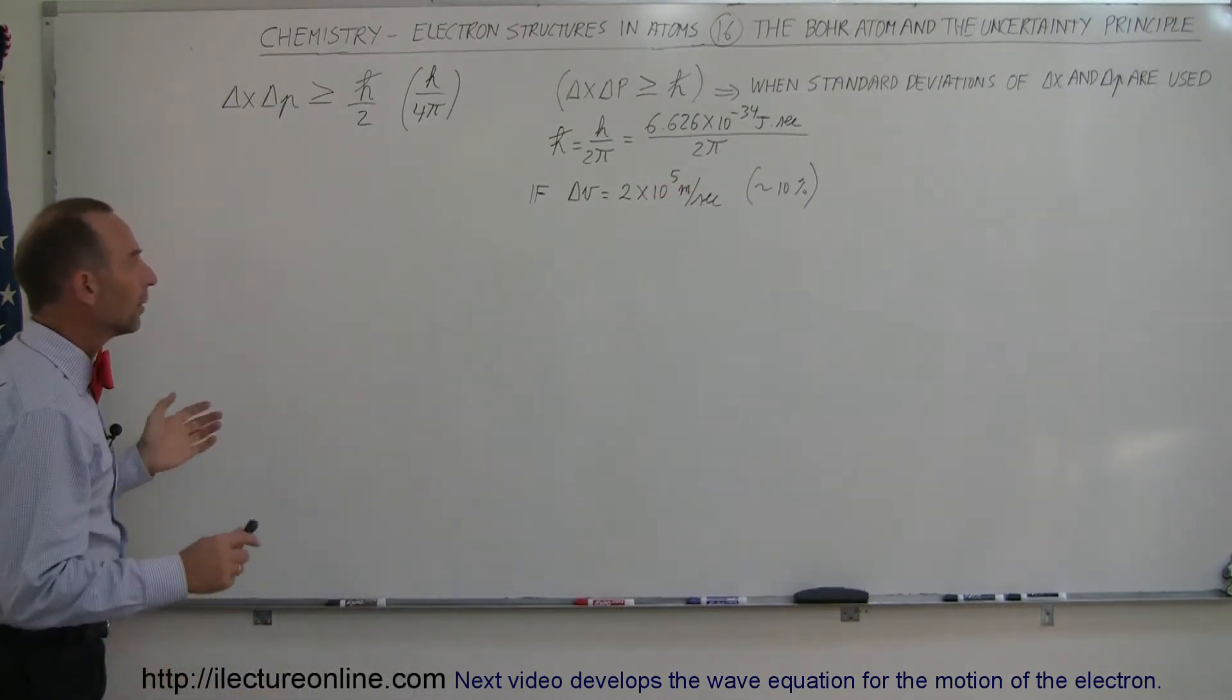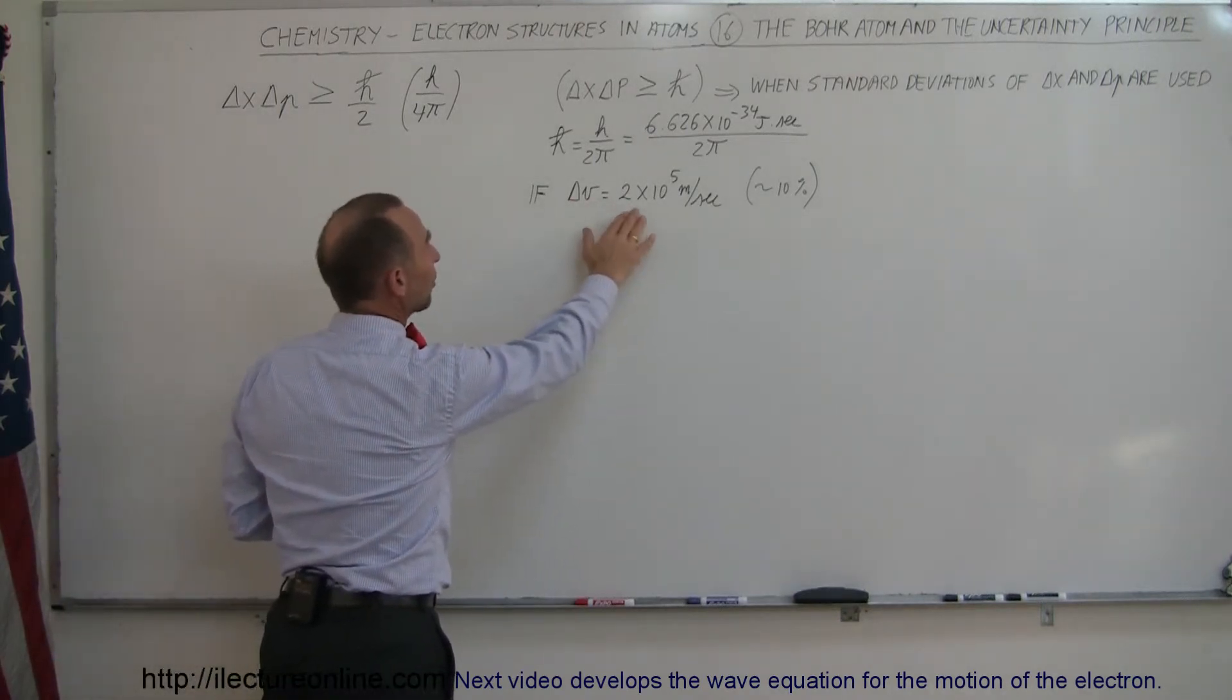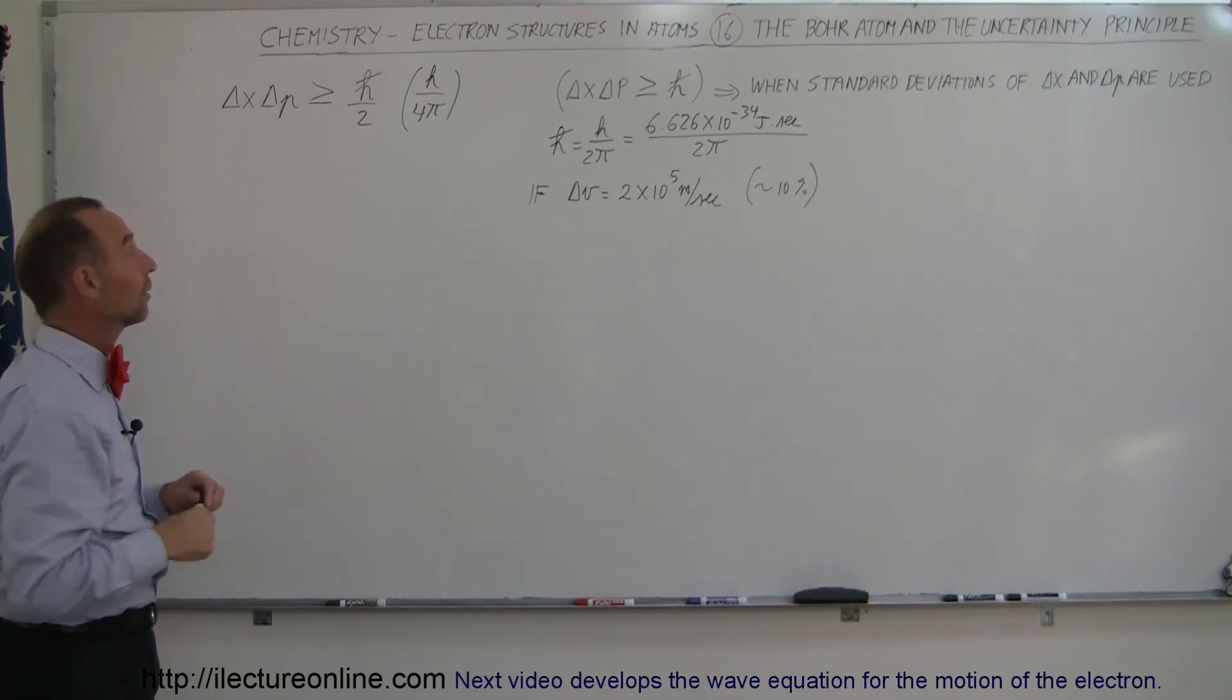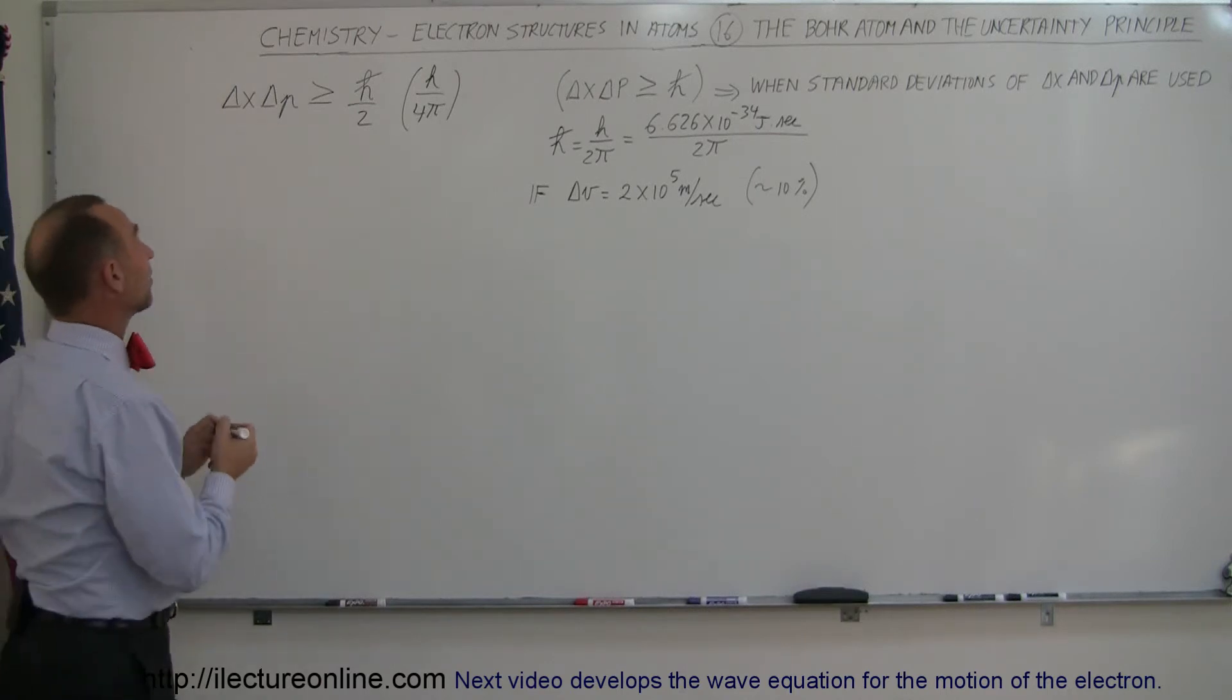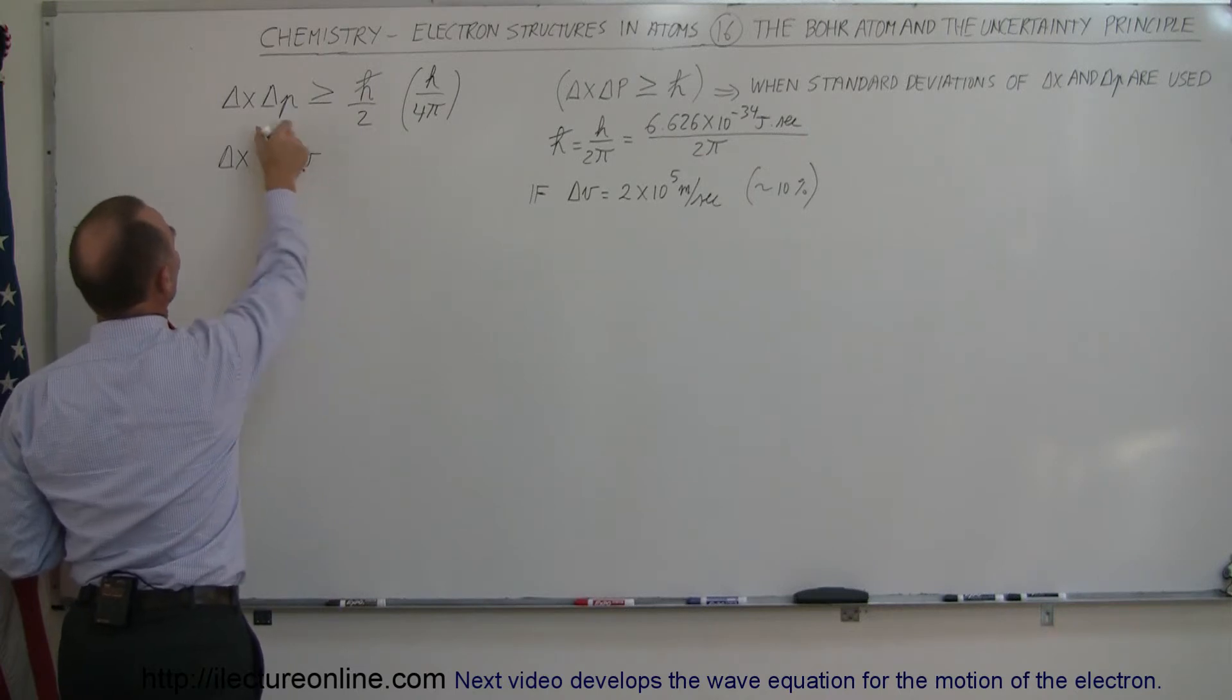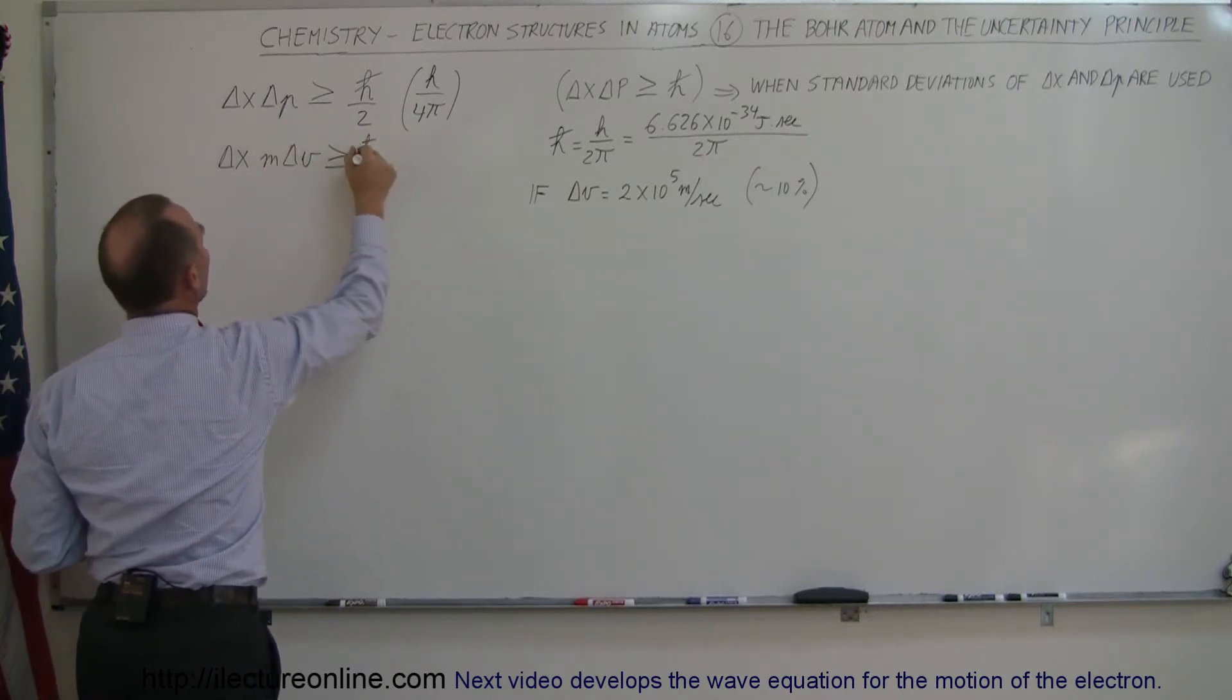All right, now let's go through with our example. So here we have an uncertainty in our velocity, which is about 10% of its calculated speed. What would then be the uncertainty in finding the position of the electron? So we're going to find the Δx of this. So first we write Δp, the momentum, as m times v. So we end up with the uncertainty in the position times the uncertainty in the mass times the uncertainty in the velocity has to be greater or equal to h-bar divided by 2.